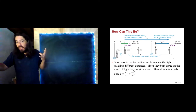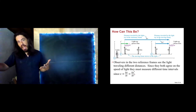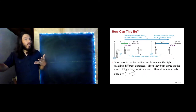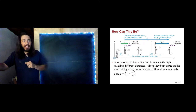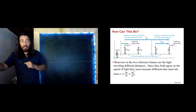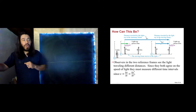They all agree that the light ray is traveling at the speed of light C. What they disagree on is how far the light ray traveled. Dan and Eric think the light ray traveled delta X′, whereas Laura thinks that the light ray traveled a greater distance — delta X.